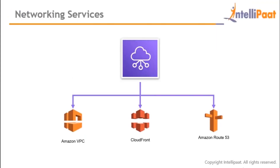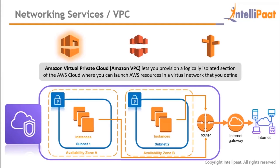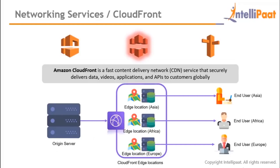Networking services include Amazon VPC, CloudFront, and Amazon Route 53. Amazon VPC (Virtual Private Cloud) lets you provision a logically isolated section of the AWS cloud where you can launch multiple AWS services in a virtual network you define. You can create multiple subnets in multiple availability zones and launch services like EC2, Elastic Beanstalk, OpsWorks, and Route 53. VPC peering allows connecting two VPCs to communicate and route traffic between them.